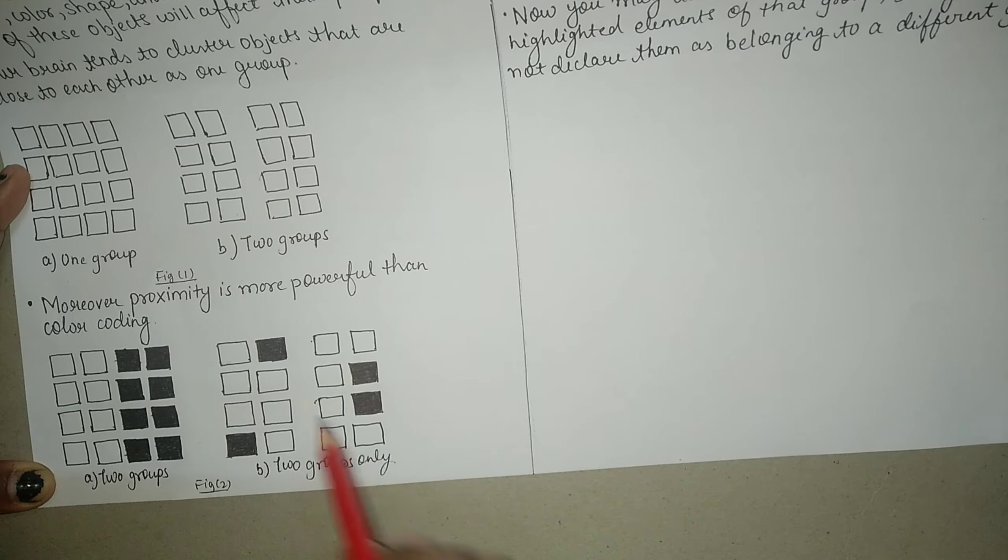But if I talk about figure 2B, then we can see that in one group there are two boxes highlighted. And the other group, because of the displacement, because of the distance between the two columns, first, second and third and fourth columns, we are considering these two groups.